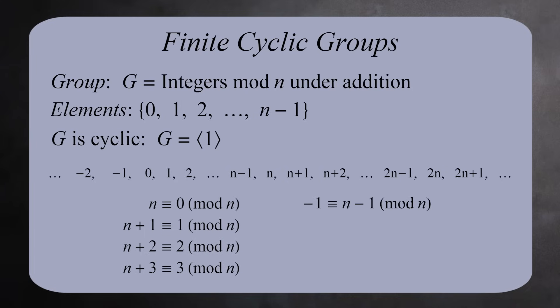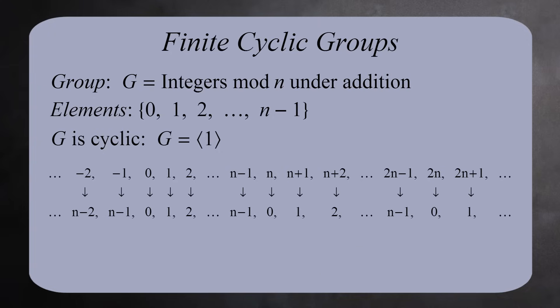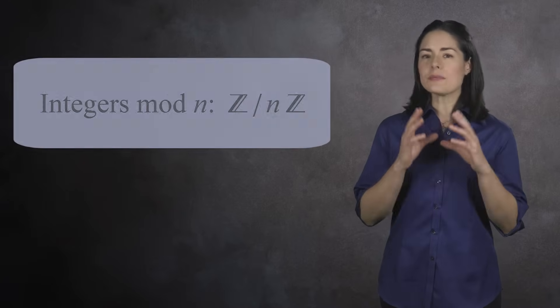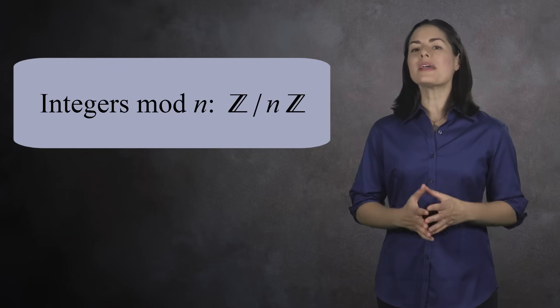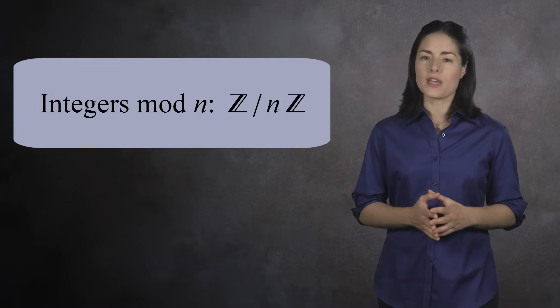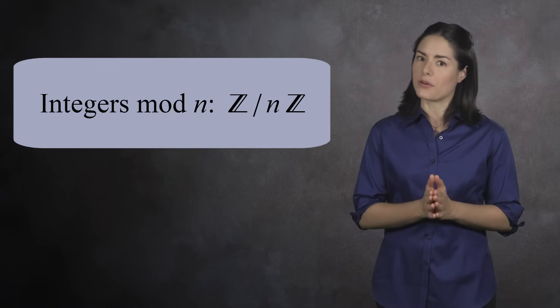Negative 1 is congruent to n minus 1. Negative 2 is congruent to n minus 2, and so on. So the group generated by 1 repeats itself. It cycles through the numbers 0 through n minus 1 over and over. This is why it's called a cyclic group. The integers mod n are a finite cyclic group under addition. In abstract algebra, the integers mod n are written like this. This will make sense once you've studied quotient groups, so don't panic if you're not familiar with this notation.